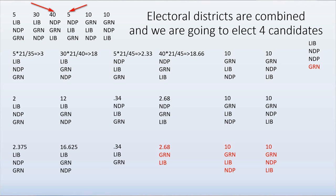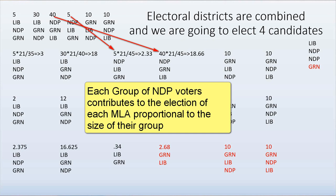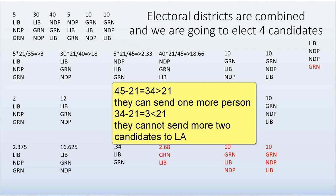For NDP people, their second choice is Green and third choice is Liberal. There are some NDP people whose second choice is Liberal and third choice is Green. We are choosing four people to go to parliament. With 100 voters, the quota is 100 divided by 5 — that's 20, plus 1 equals 21. You must have 21 votes for each person who goes to parliament. Out of 45 NDP first-choice voters, they can send two people. Liberals can send one person.